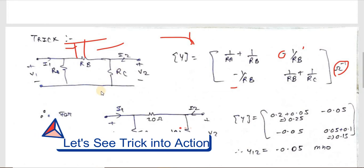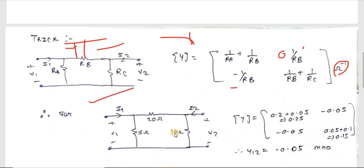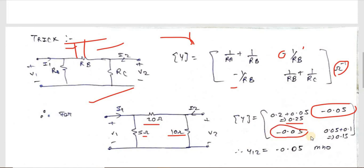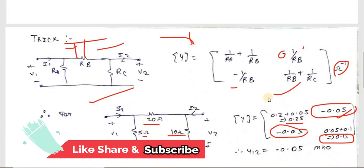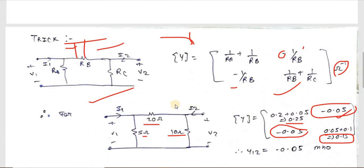It is similar to the Z-parameter formula, but here you take the inverse of the resistance, and Y12 and Y21 both carry a negative sign. The unit is siemens. Applying this to the same question with 5 Ω, 20 Ω, and 10 Ω: Y11 = 1/5 + 1/20 = 0.2 + 0.05 = 0.25, Y12 = −0.05, Y21 = −0.05, Y22 = 1/10 + 1/20 = 0.1 + 0.05 = 0.15.